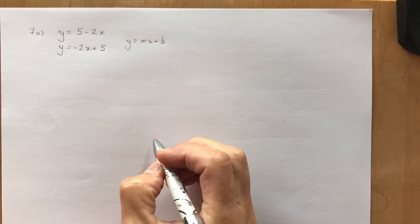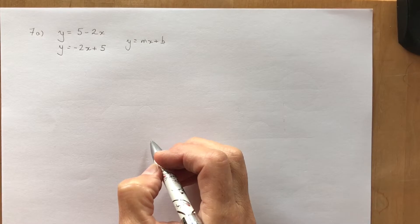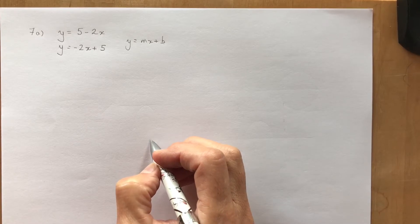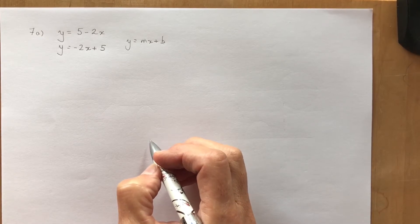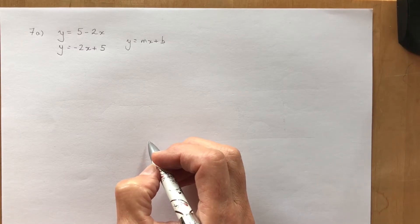Today before I begin lesson 1.2, I want to go over a few of the homework questions from 1.1, in particular number 7 which asks you to identify the relation and predict whether or not it's going to be a function by using the vertical line test and they ask you also to graph it.